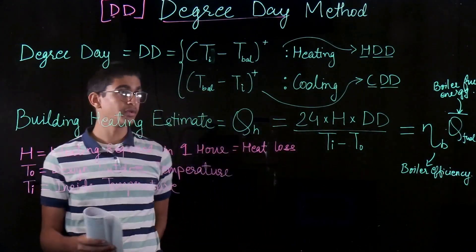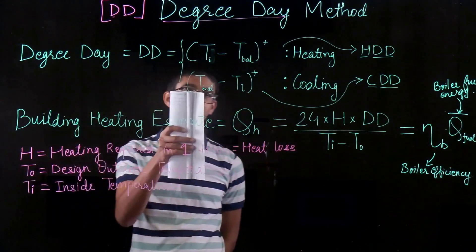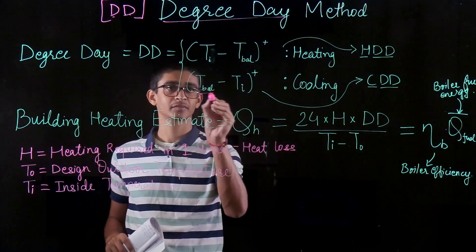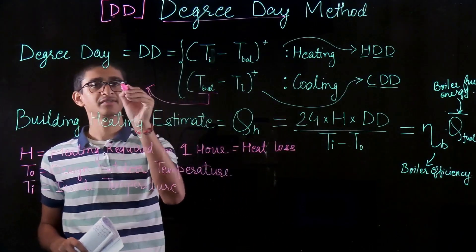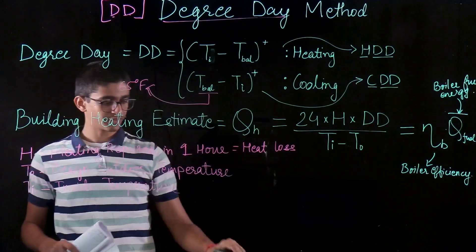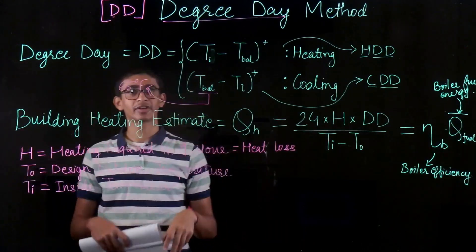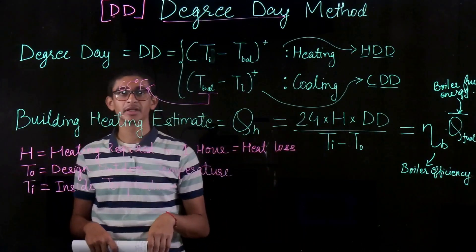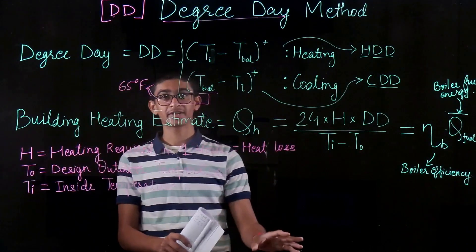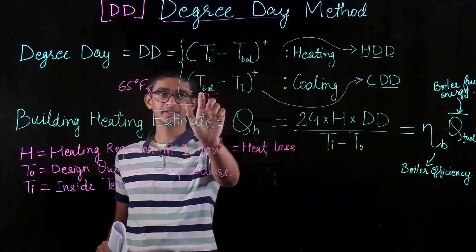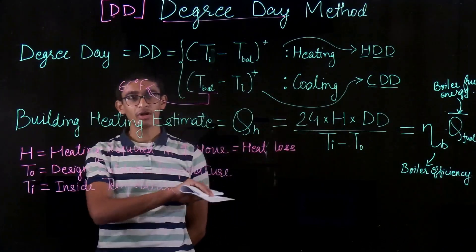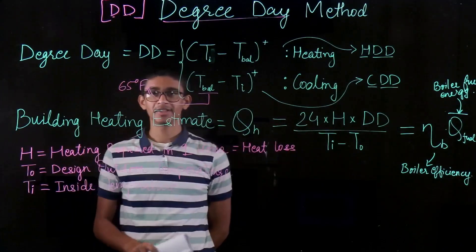Another disadvantage is that we assume a constant balance temperature of 65°F. In reality this temperature depends on the location, the comfort requirements, the internal heat gains, and many other technical factors embedded in T_balance. We will look at all the details of T_balance later.